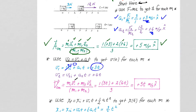We do the same thing for V2. V2 initial was also zero. Acceleration two was six, so V2 equals six T. We plug three T in for V1 and six T in for V2, divided by the total mass, and we get the velocity of the center of mass equals five T.